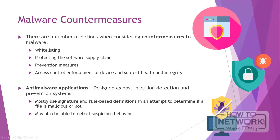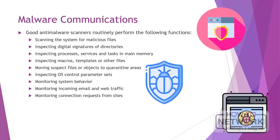Anti-malware applications are generally designed as host intrusion detection and prevention systems. They mostly use signature and rule-based definitions in an attempt to determine if a file is malicious or not. Active anti-malware defenses running on a host can also detect behavior by a process which seems suspicious. Good anti-malware scanners routinely search through high capacity network storage systems and perform the following functions: scanning the system for malicious files, inspecting digital signatures of directories, inspecting processes, services and tasks in main memory, inspecting macros, templates or other files, moving suspect files or objects to quarantine areas, inspecting operating system control parameter sets, monitoring system behavior, monitoring incoming email and web traffic, and monitoring connection requests from sites.